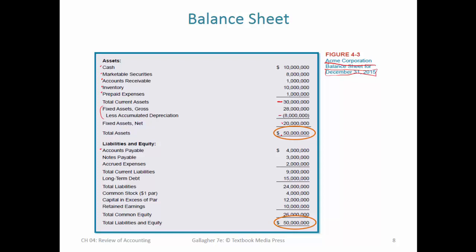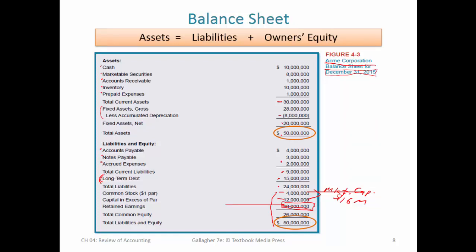On the liabilities side, again the most current things first: accounts payable, notes payable (short-term), and accrued expenses representing services used from suppliers but not yet paid or billed — similar to accounts payable. We add up total current liabilities, then look at long-term liabilities — this company only has long-term debt. Adding those two gives total liabilities. Then we're at the equity portion: par value of common stock, capital in excess of par — these two together would be what we call market cap or market capitalization, totaling $16 million for this company. They've had $10 million in retained earnings over their history. Total assets must equal total liabilities and equity — and it does.